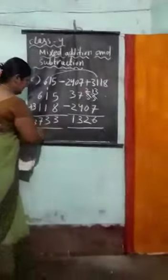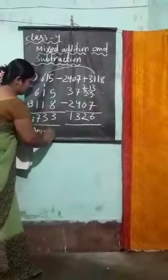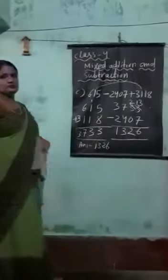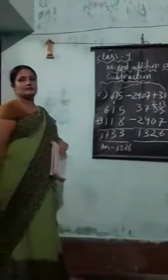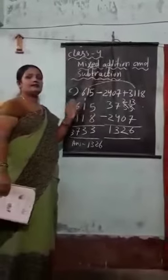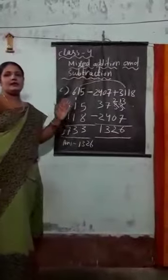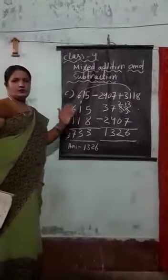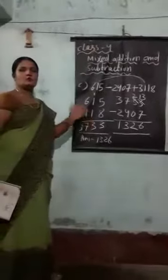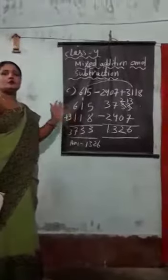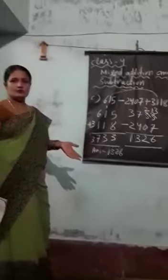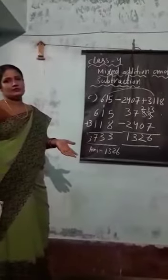You can write the answer like this: 1326. So, this is the answer. Students, I hope you understood how to do addition and subtraction at a time in a question, by first solving following the rule I told you. In the next class, something more I will teach. I hope you understood, students. Thank you very much.